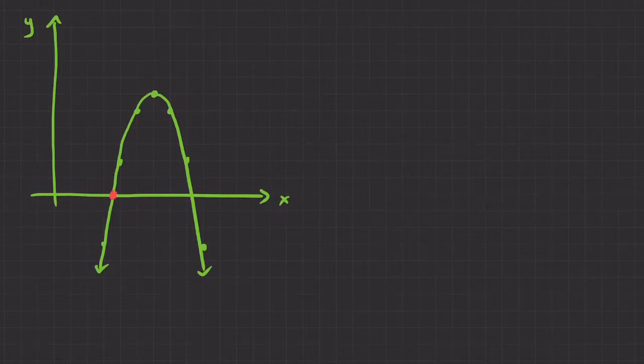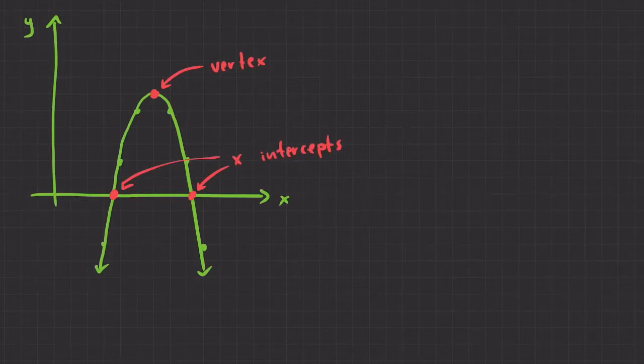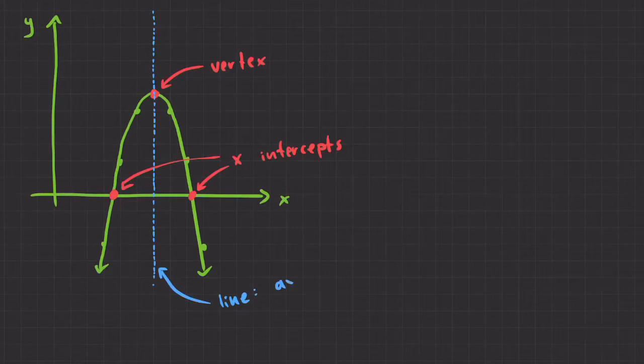So there's a few things I can say about this parabola. There's a few key points. So these three points are quite important. This point right here, we call that the vertex. So the vertex of your parabola is kind of like the middle of the parabola. These are called the x-intercepts because they intersect the x-axis. These are going to be really key points. We also have this line right here, which kind of slices the parabola in half. This line is called the axis of symmetry.